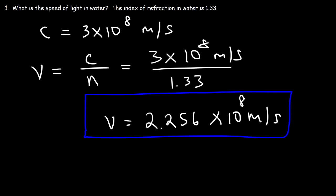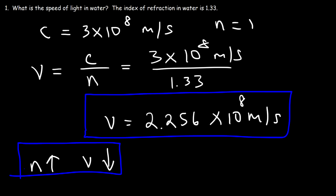As the index of refraction of a material increases, the speed of light in that material decreases. In a vacuum, the index of refraction is 1, but in water it's 1.33, and light travels a lot slower in water than it does in a vacuum. So make sure you understand this relationship.